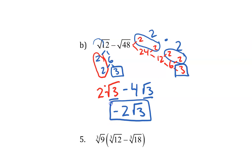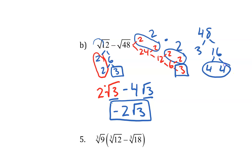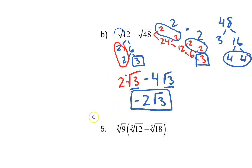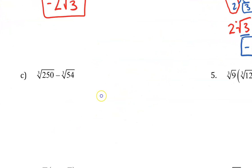If you had noticed earlier that 48 is really 3 times 16, and 16 is 4 times 4, you could have just taken that 4 out right there. You don't have to go all the way down to prime factors if you recognize a pair of factors that are the same.